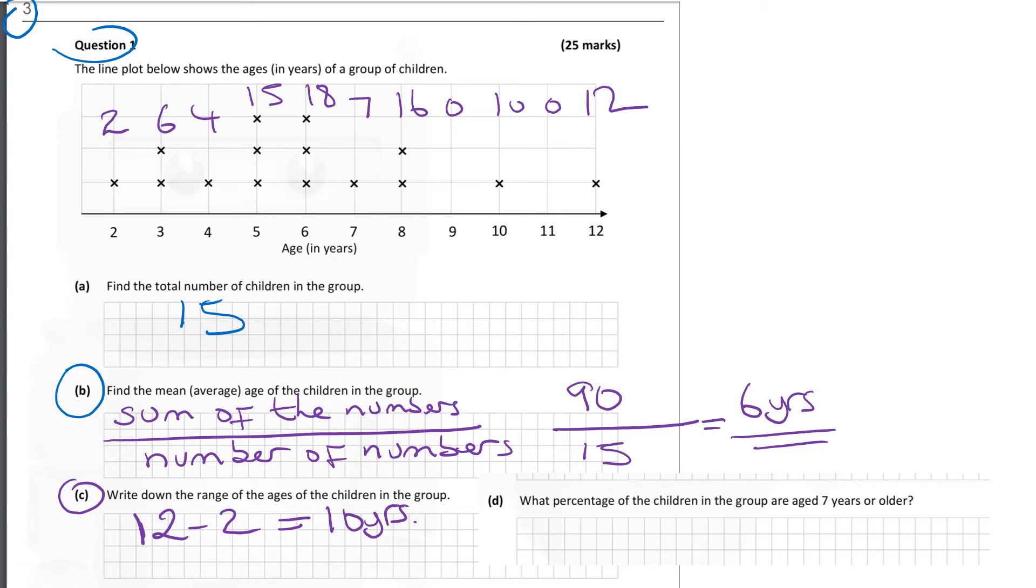Part D. What percentage of the children in the group are aged 7 years or older? So we can see from our chart that we have 1, 2, 3, 4, 5. So of the number of children, 5 are 7 years or older. So that's 5 out of 15, which simplifies to one-third, which of course is equal to 33 and one-third percent.